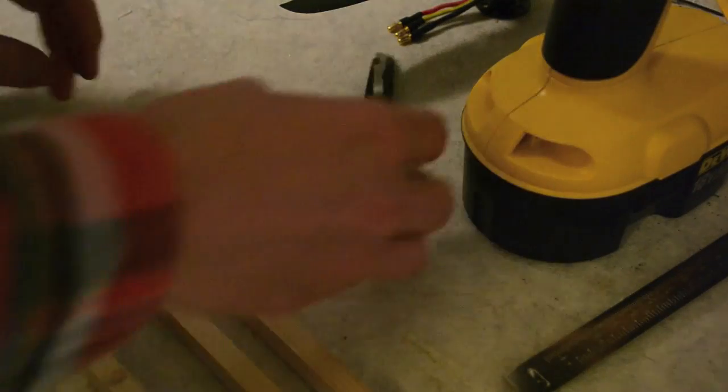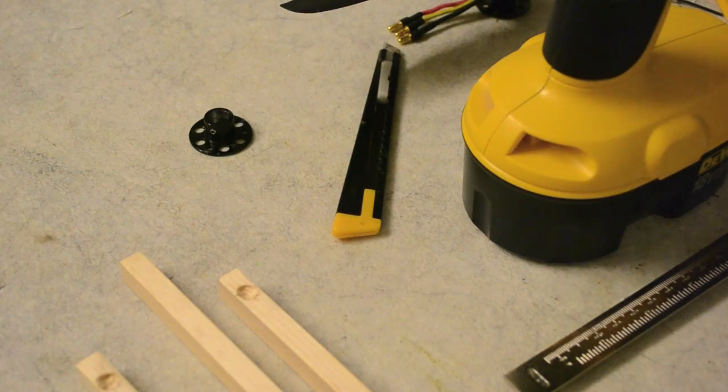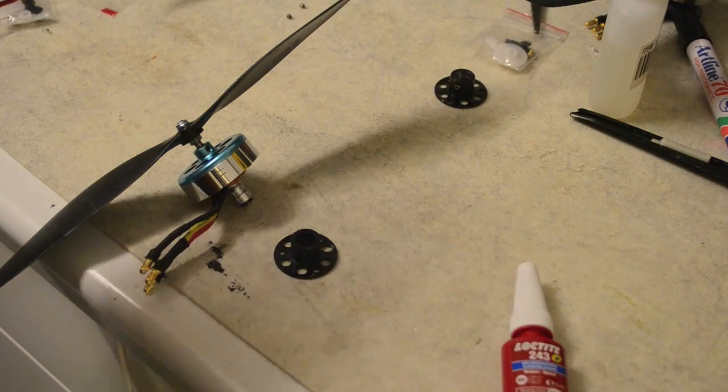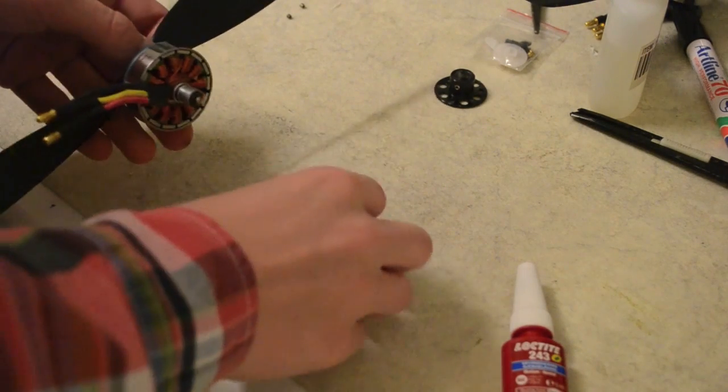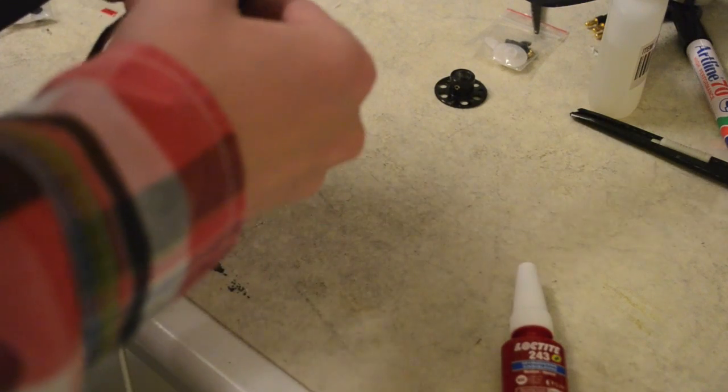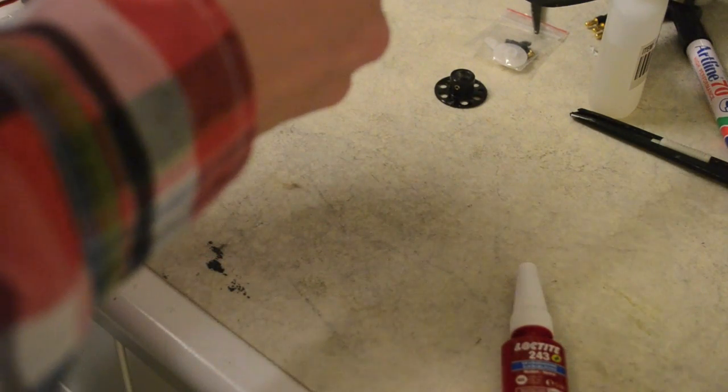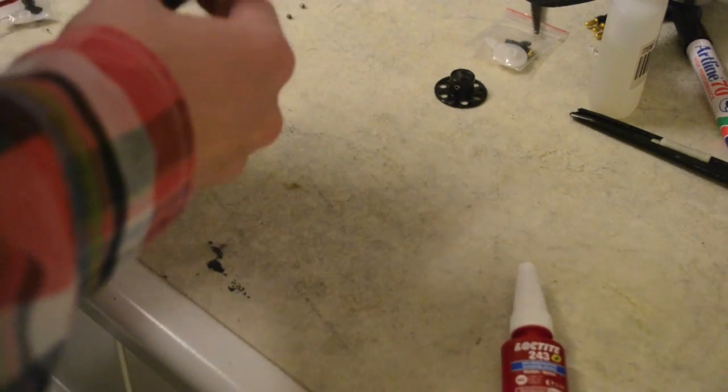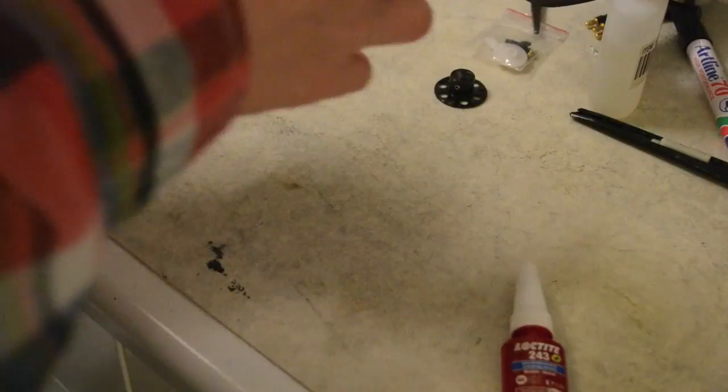Since we've now got the holes cut out, we can mount the motors on there. What I like to do with these motors and the motor mounts, they may come loose, so I like to mount it like that and then mount this with zip ties on your frame.